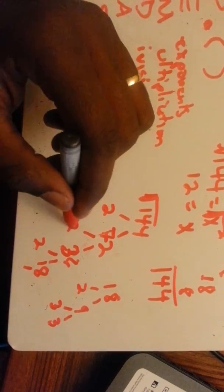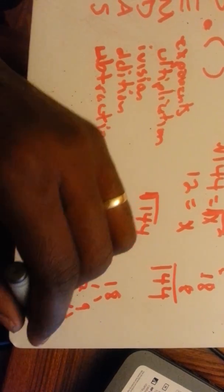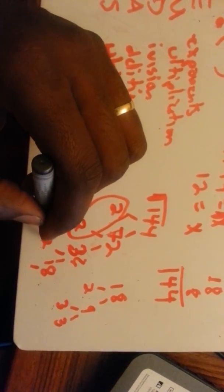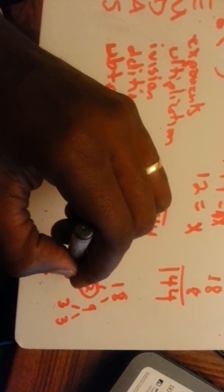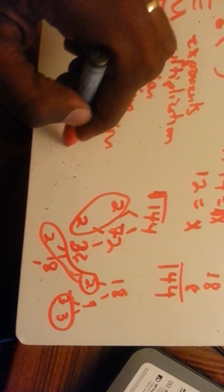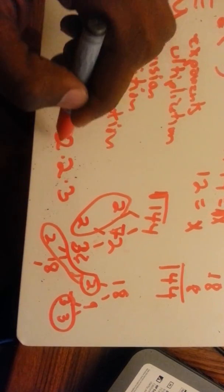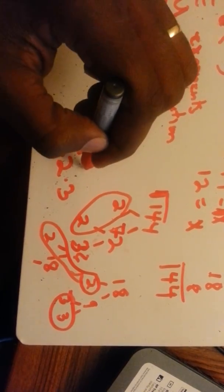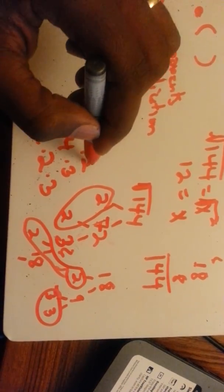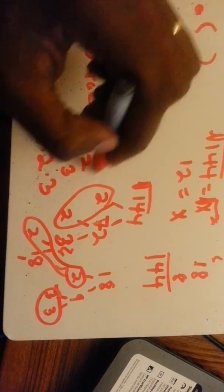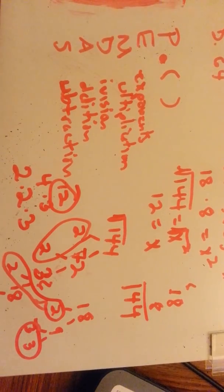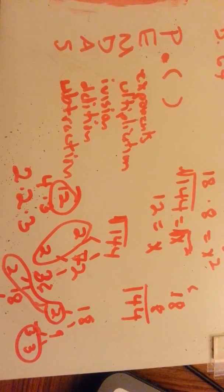Now we have 2, 2, 2, 2, 3, 3. For square roots we have to take groups of 2. So we have two 2s and two 2s and a pair of 3s. That gives us 2 times 2 times 3. 2 times 2 is 4, and 4 times 3 is 12. The square root of 144 is 12. Sorry that took a long time, but that's how I would actually solve it out if I didn't know the answer. Thanks.